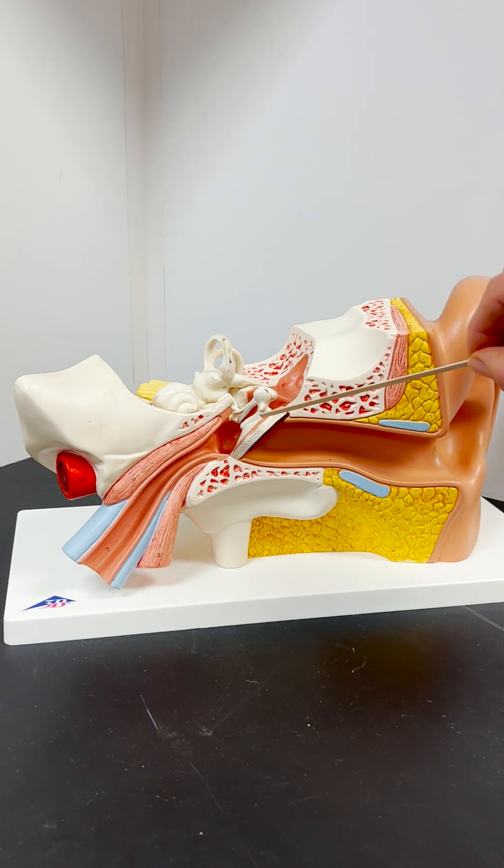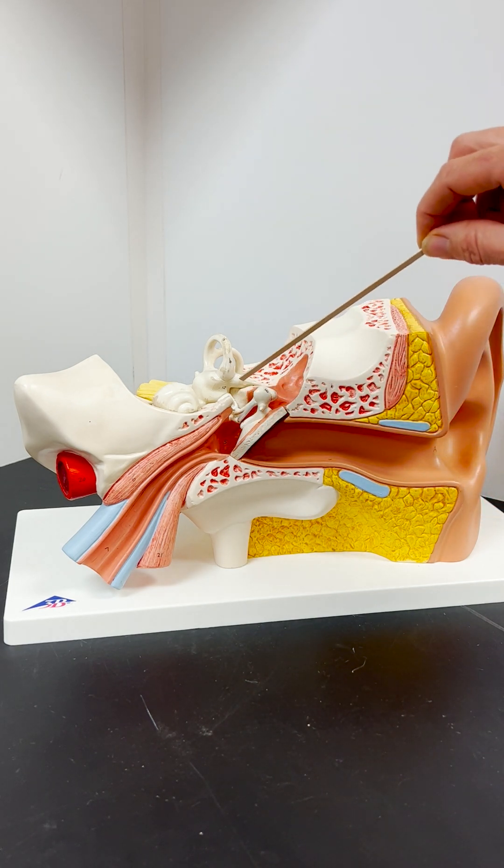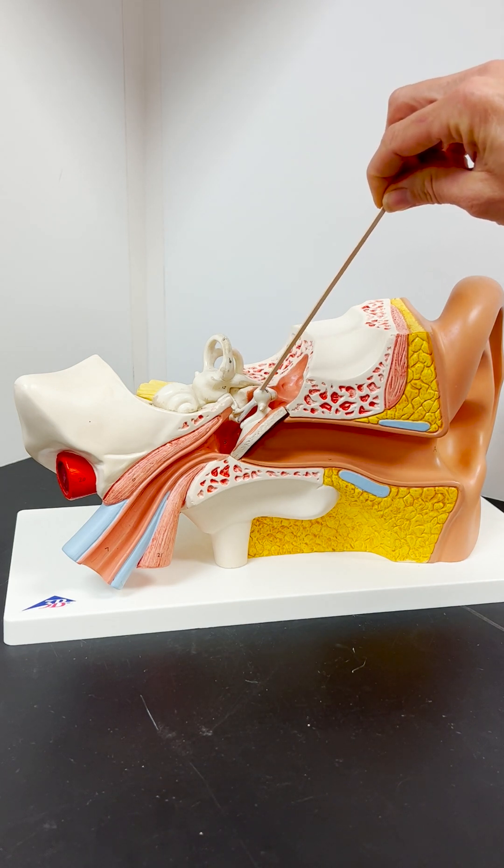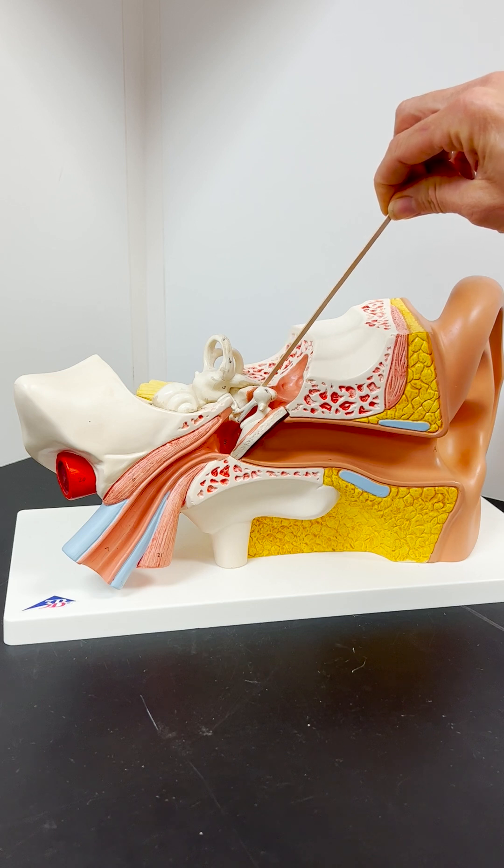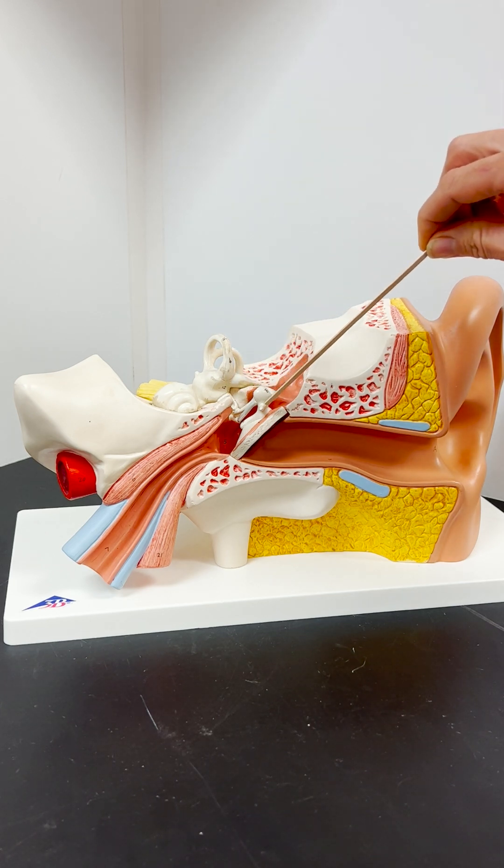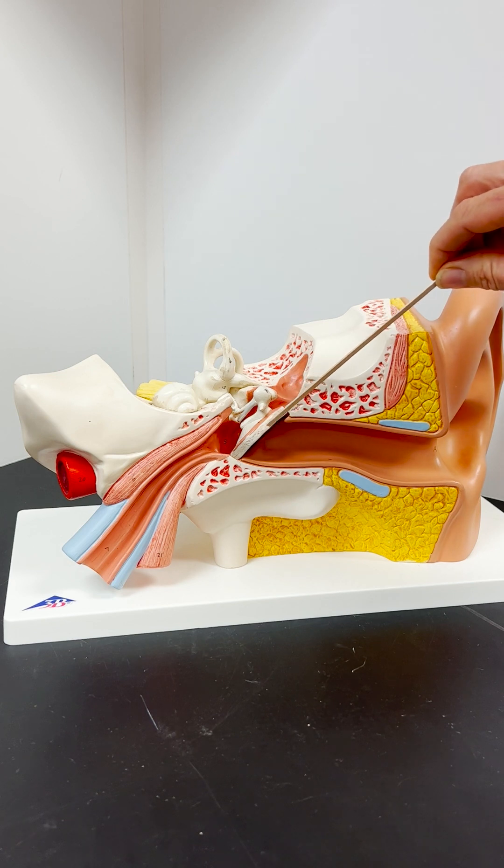The vibration of the tympanic membrane vibrates the auditory ossicles, beginning with the malleus, followed by the incus, and then the stapes. The malleus is the one that is immediately attached to the tympanic membrane.